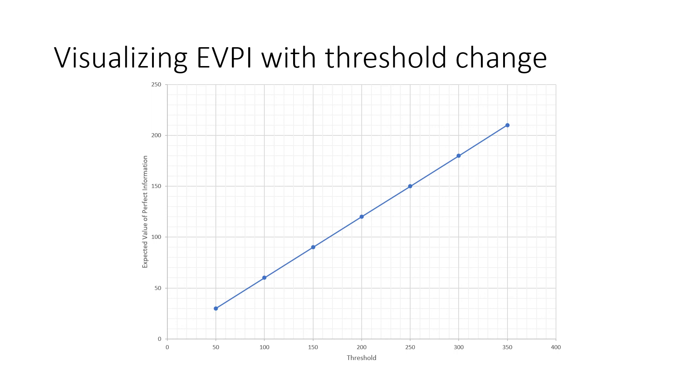So that's an explanation of the expected value of perfect information in the context of health technology assessment. I'll see you in the next video where we're going to be talking about the expected value of perfect parameter information in terms of not only calculation, but also in terms of the decision tree. See you in the next video. Take care.